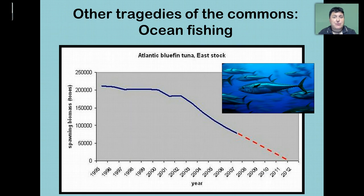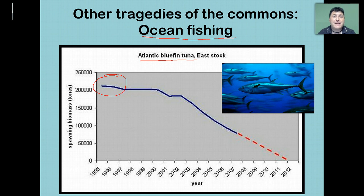While the pasture example is a hypothetical one, there are many real-life examples of tragedies of the commons. For example, when we look at ocean fishing, the Atlantic bluefin tuna in the late 90s had very high numbers. But as a result of unsustainable fishing practices, we've managed to reduce the stocks to very low numbers to the point that perhaps they may not recover.